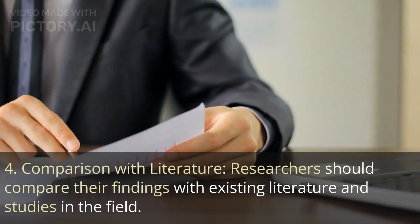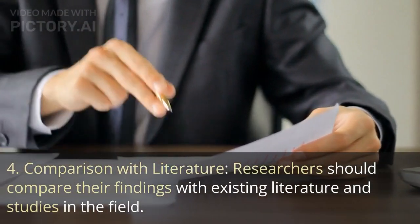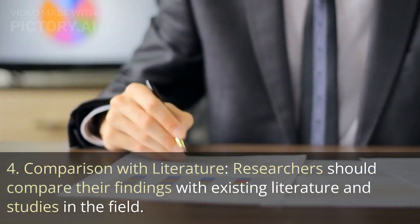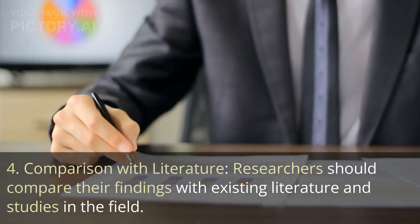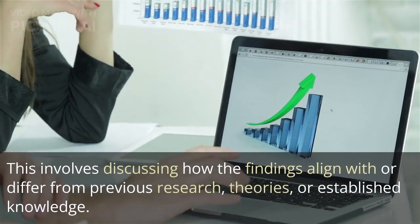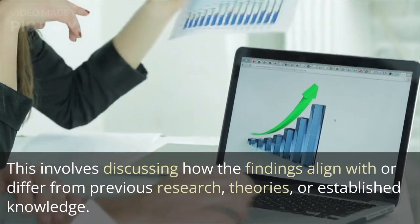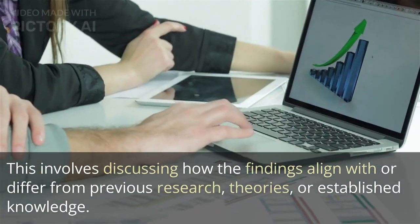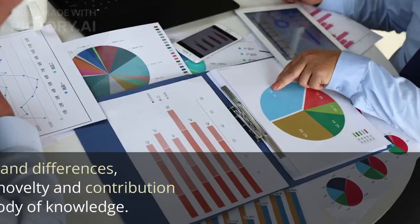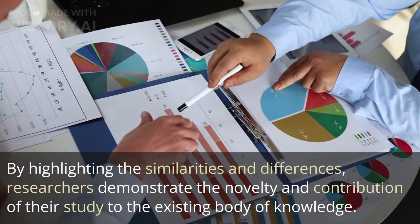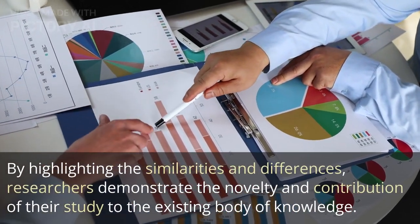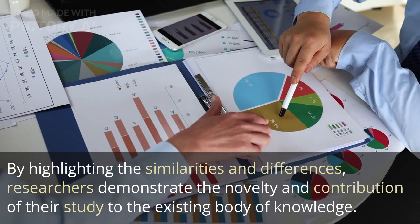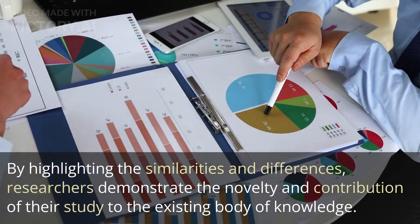4. Comparison with literature. Researchers should compare their findings with existing literature and studies in the field. This involves discussing how the findings align with or differ from previous research, theories, or established knowledge. By highlighting the similarities and differences, researchers demonstrate the novelty and contribution of their study to the existing body of knowledge.